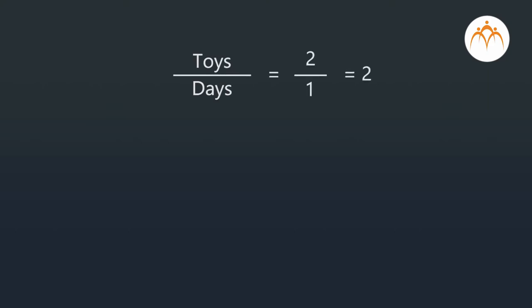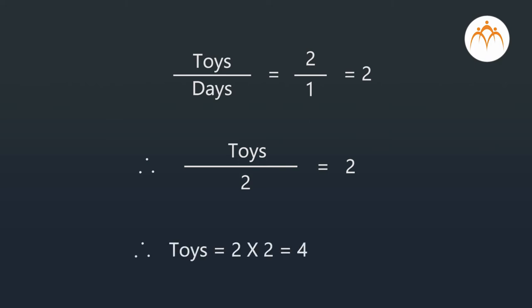Toys divided by days is equal to 2 divided by 1, which is equal to 2. So, when the number of days is 2, we can write: toys divided by 2 equals 2. We get toys equals 2 into 2, which is equal to 4. So, in 2 days he will make 4 toys.